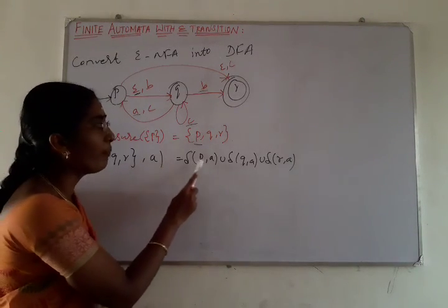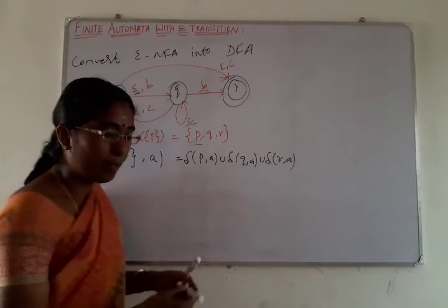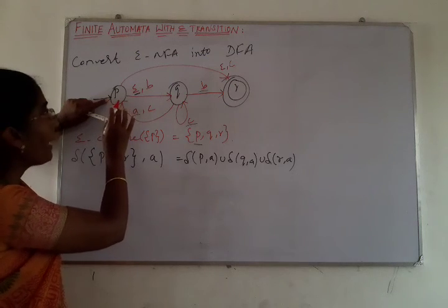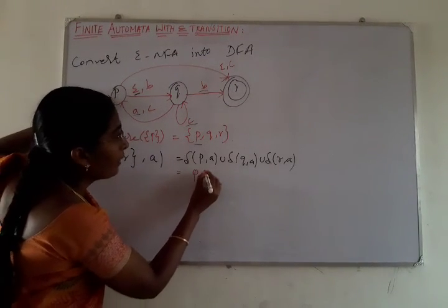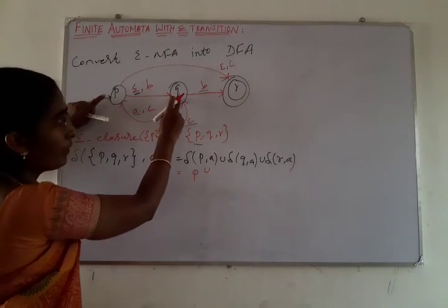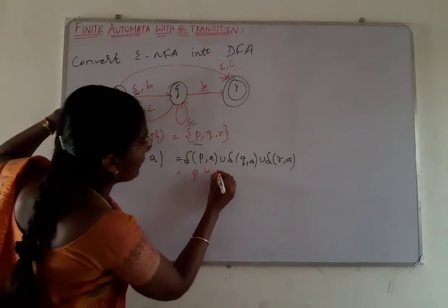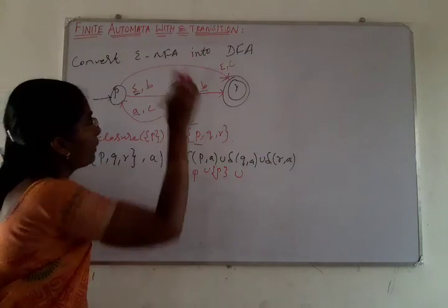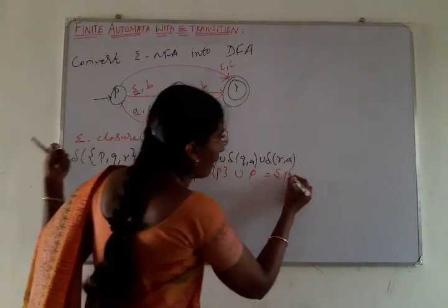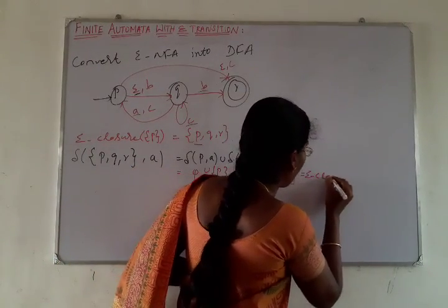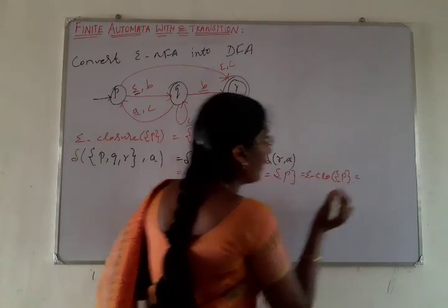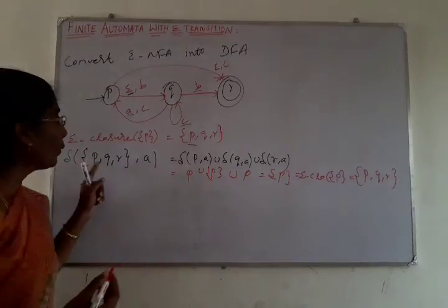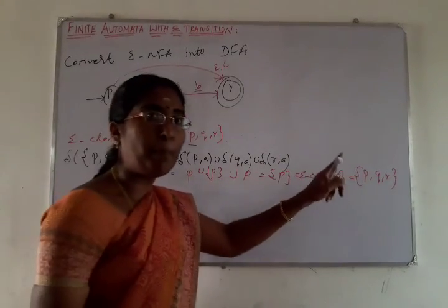First we extend for symbol A: δ(P, A) union δ(Q, A) union δ(R, A). There is no transition out of state P for input symbol A, so it equals ∅. From Q for symbol A, we go to state P, so δ(Q, A) = P. There is no transition from R for input symbol A, so that is also ∅. The result is state P. Finally, we find the epsilon closure of P, which is {P, Q, R}. So the transition from state PQR on input A goes to state PQR — a self-transition.